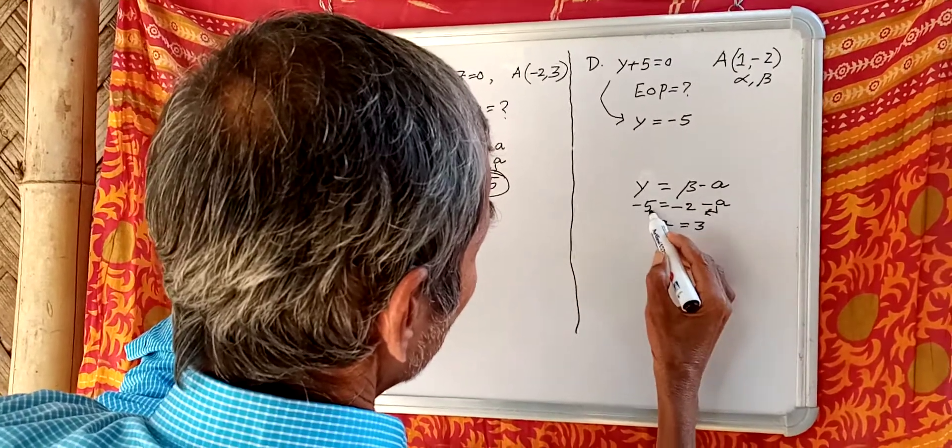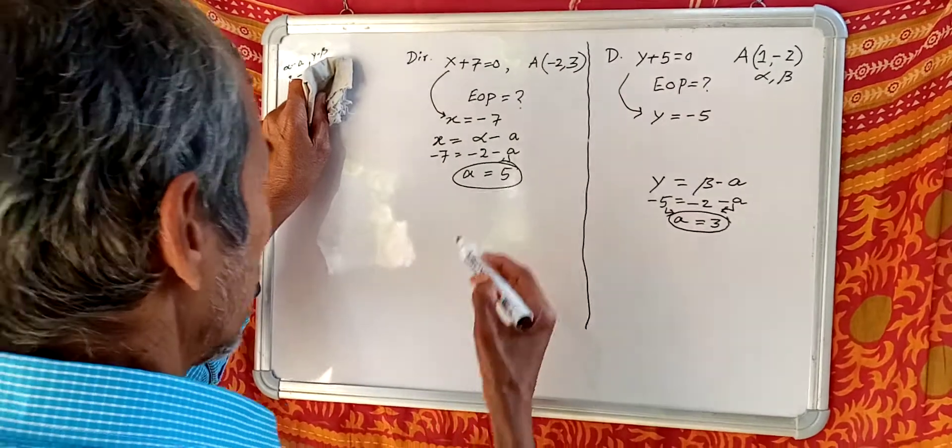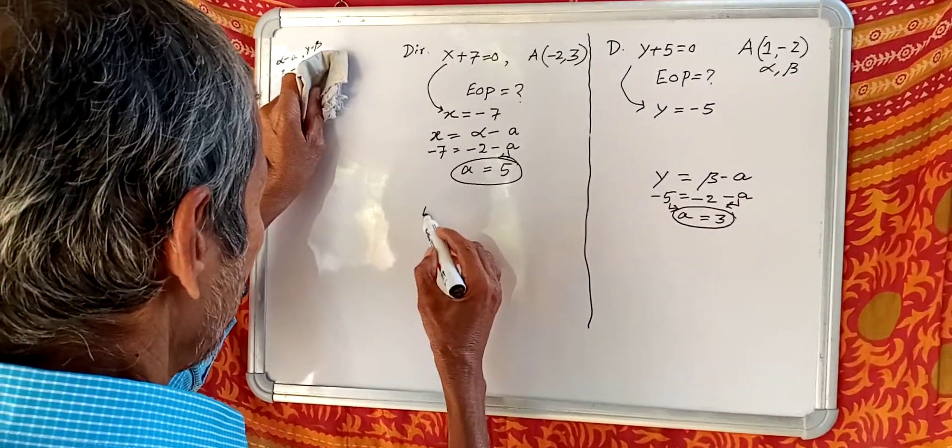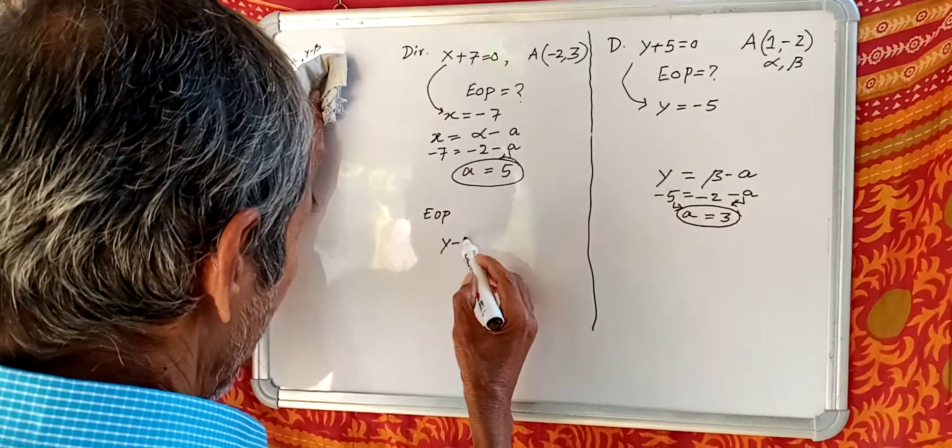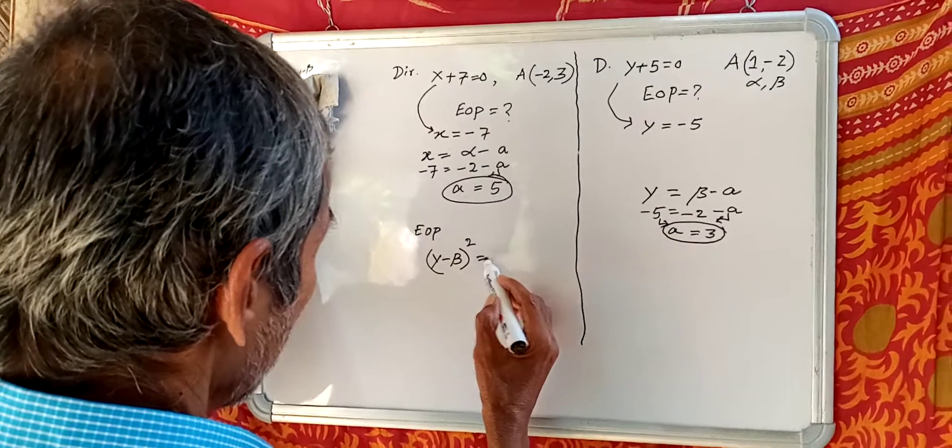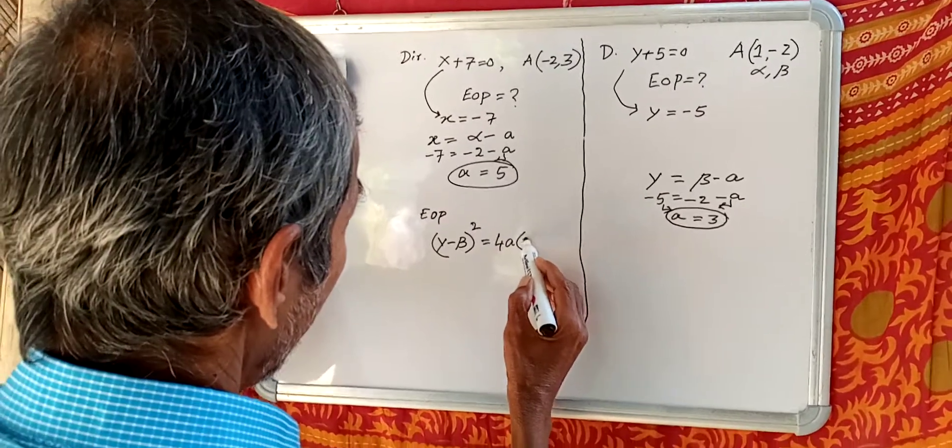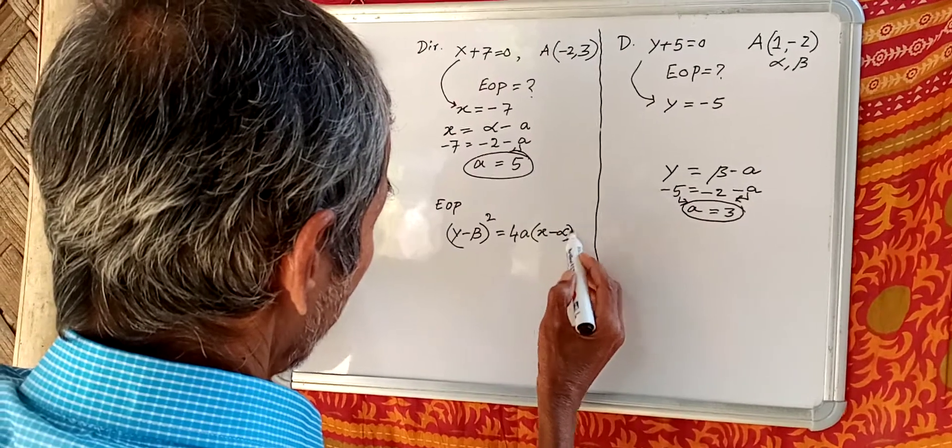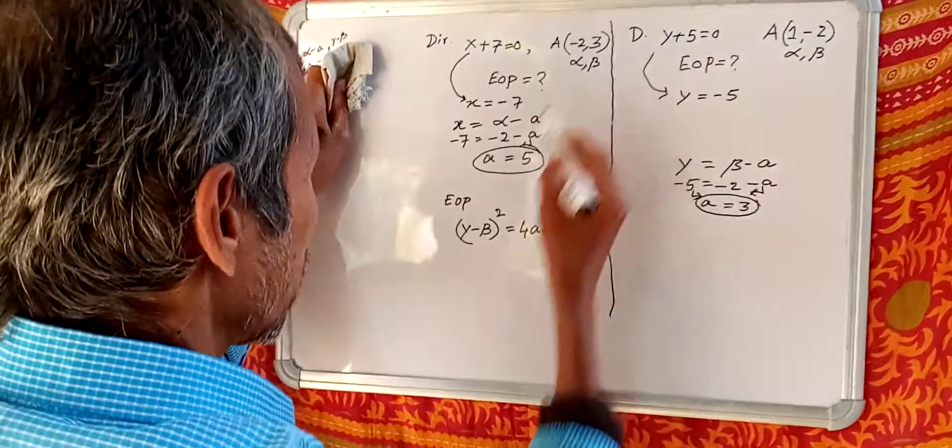Now EOP. Now equation of parabola: Y minus beta square equals 4A times X minus alpha. This is alpha, this is beta.